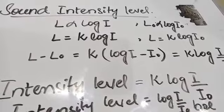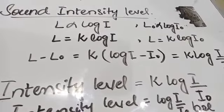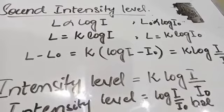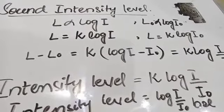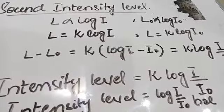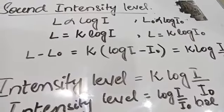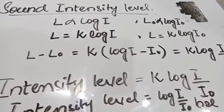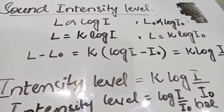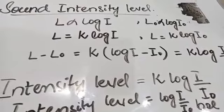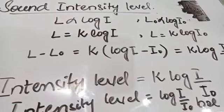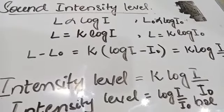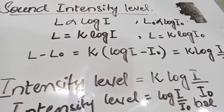The barely audible, or faintest, intensity of sound that our ear can tolerate without any painful effect is 10 raised to the power minus 12 watt per meter square. This is taken as a reference intensity called the zero Bel. Its unit is named after Alexander Graham Bell.